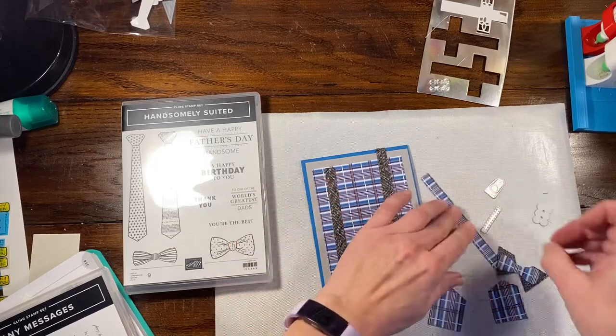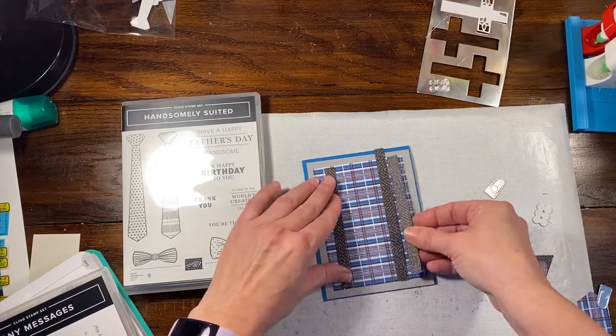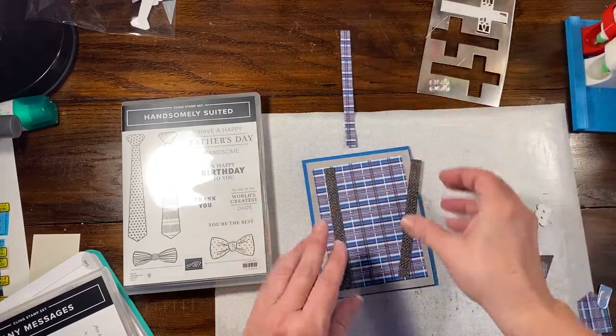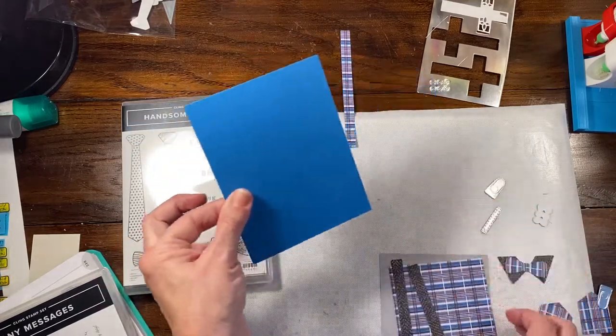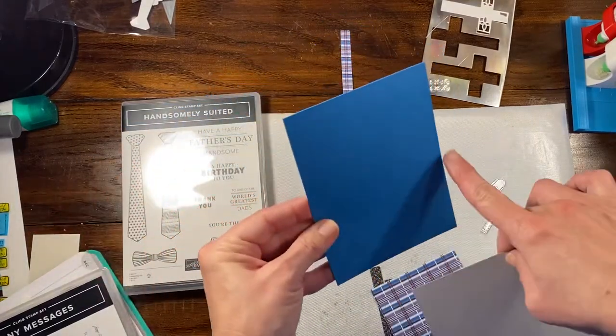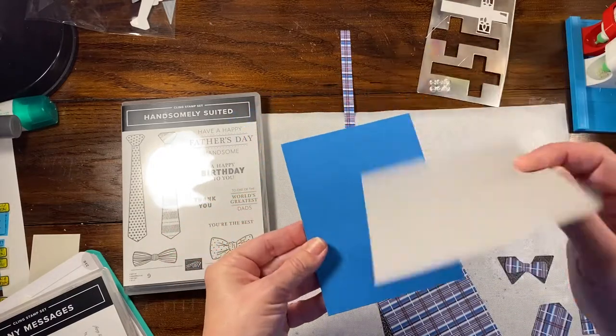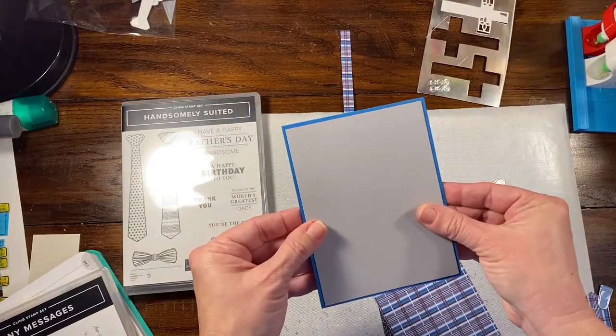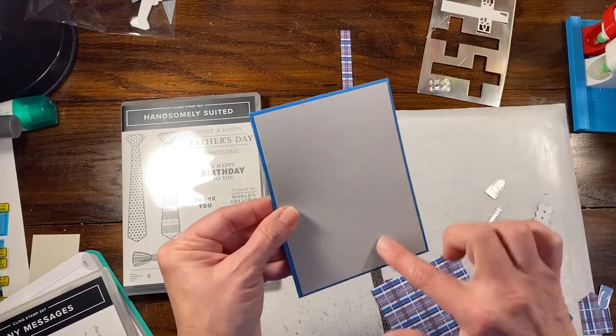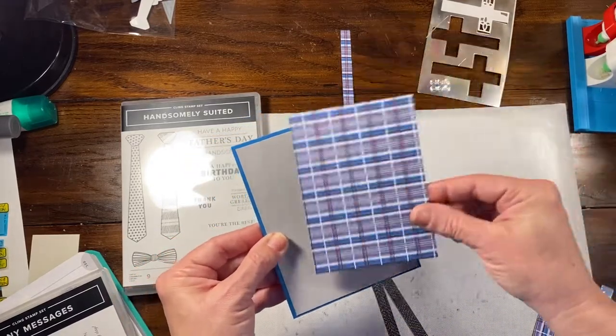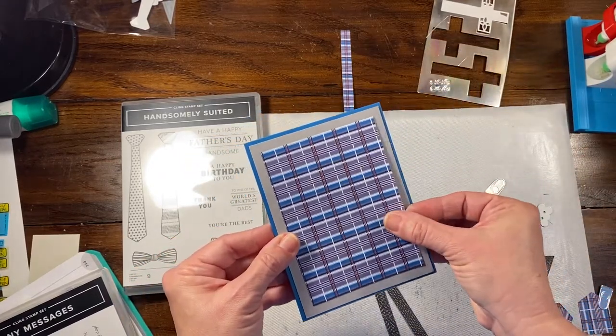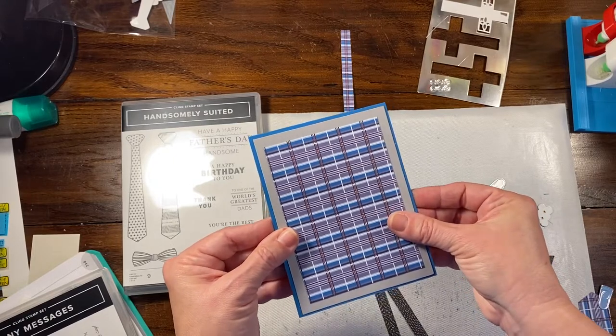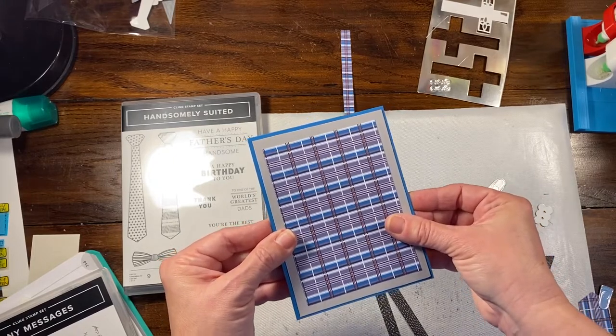Let me make sure I have my right pieces here. What I have is Pacific Point. This is a regular base, 4.25 by 11, score it 5.5. I have a quarter sheet of Smoky Slate, 4 by 5.25. This is some of the really awesome DSP. I believe it is called Handsomely Suited DSP.